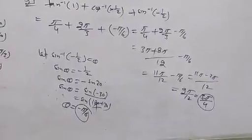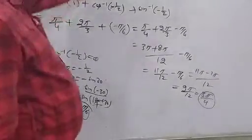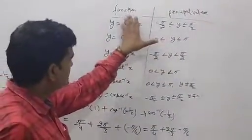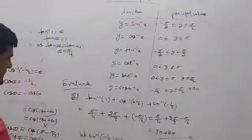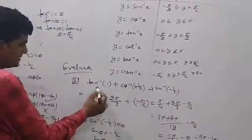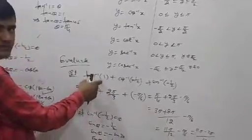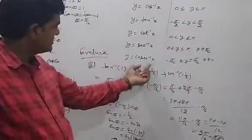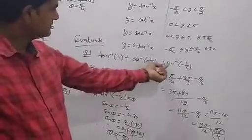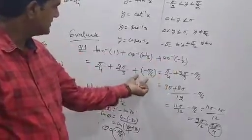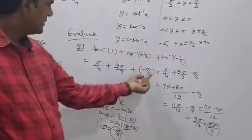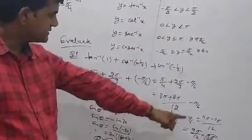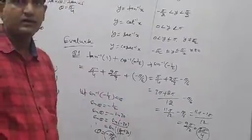Are you understanding? Very simple. First of all, this is very important: you have to know the principal value of each function. tan inverse 1 has principal value pi by 4; cos inverse of minus 1 by 2 has principal value 2pi by 3; sin inverse of minus 1 by 2 has principal value minus pi by 6. Then by calculation we get the final answer 3pi by 4.